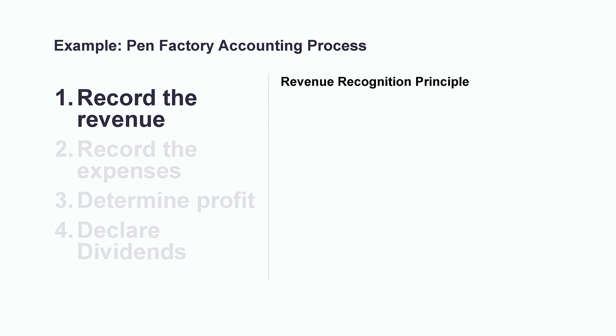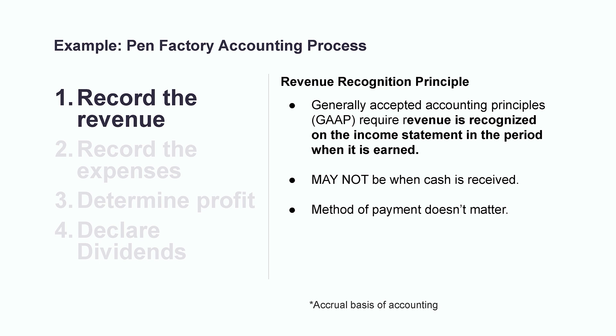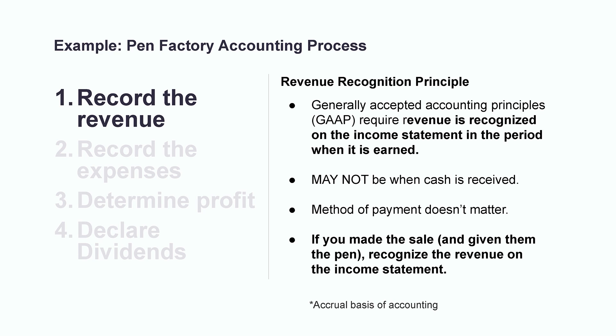Now, let's circle back to the pen company and run through the accounting process that takes place behind the scenes during these transactions. We'll be assuming that the company is using the accrual basis of accounting. Many larger companies, such as publicly traded organizations, are required to use this method. So each time we sell a pen, we earn $5 of revenue. The important piece where accounting comes into play is helping to determine the timing when the revenue can be recognized in the financial statements. Generally accepted accounting principles require that revenue is recognized on the income statement in the period when it is earned, not necessarily when the cash is received. It doesn't matter how the customer chooses to pay — cash, credit card, or even a commitment to pay in the future. As long as we have actually made the sale and the risks and rewards of ownership have been transferred to the customer — meaning we've physically given them the pen — then we recognize the revenue in the income statement.